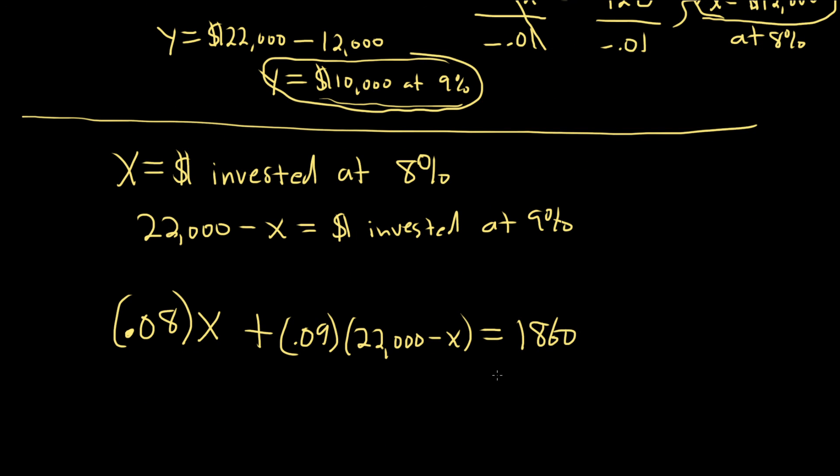Then you just solve this for X. You keep going, and then you plug it back in to get your other answer. So a little bit shorter, but I think this equation is harder for people to understand. Again, 8% of the amount you invested at 8% plus 9% of the amount you invested at 9% equals the total money earned. So this is the money earned at 8% plus the money earned at 9% equals the total money earned.